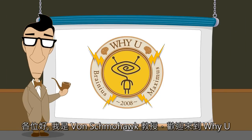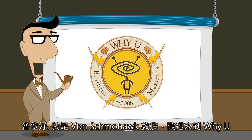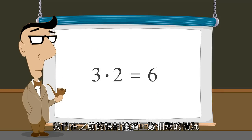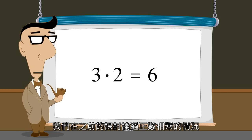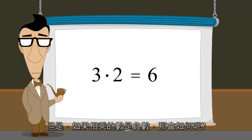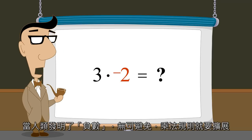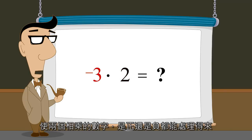Hello, I'm Professor Von Schmohawk, and welcome to Why U. In our lectures so far we have discussed multiplying positive numbers. But what happens when we multiply negative numbers? With the invention of negative numbers, the rules of multiplication had to be expanded to allow the operands to be either positive or negative.